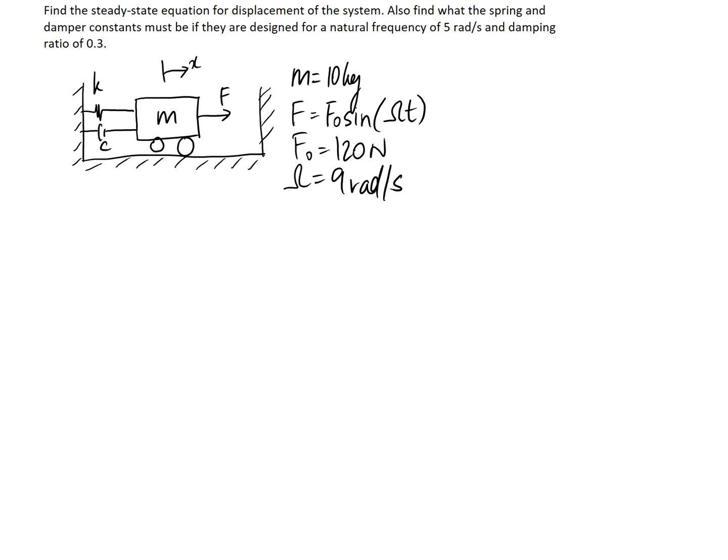We're asked to find the steady state solution for displacement of the system, and we also want to find what the spring and damper constants must be if they are designed for a natural frequency of 5 radians per second and a damping ratio of 0.3. To start off with, we might answer the second part of this question first, in terms of what the spring and damper constants need to be.